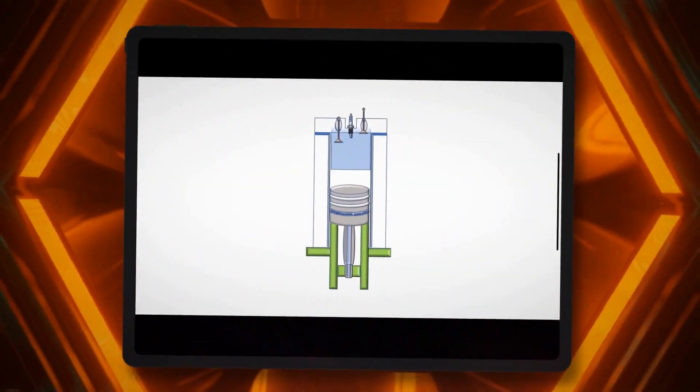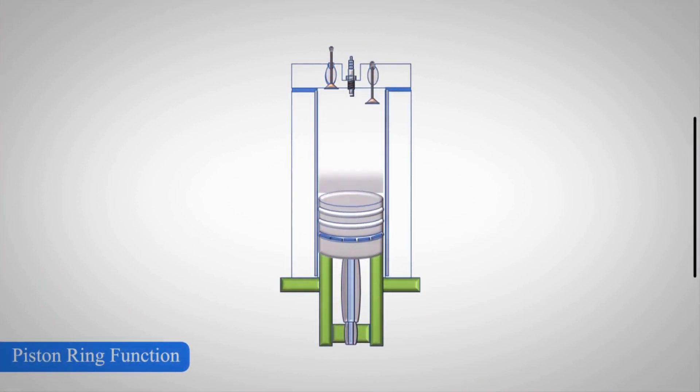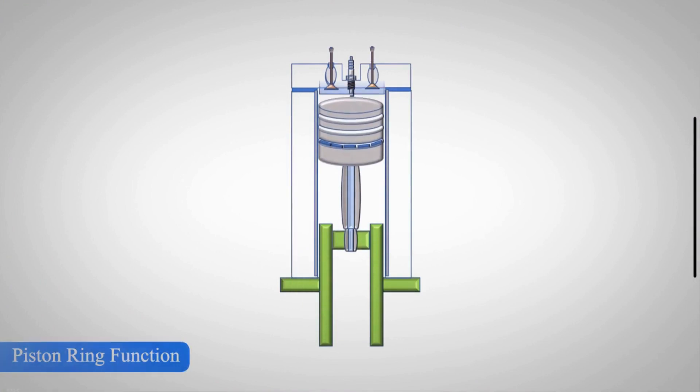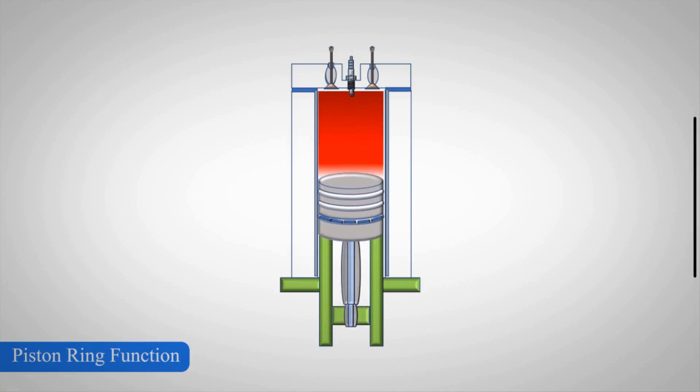The piston ring is a metallic split ring connected to the outer circumference of a piston within a steam engine or IC engine. The primary function of the piston rings is to seal the engine cylinder, minimizing gas leakage into the crankcase.